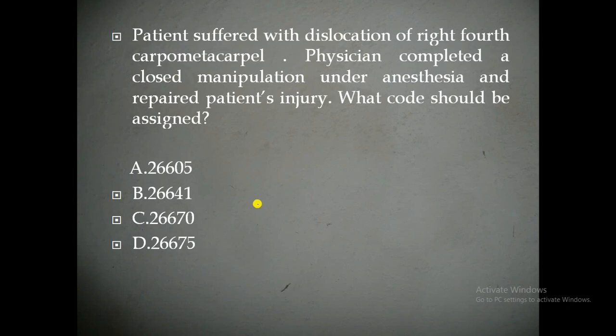In this scenario, the patient is having a dislocation — specifically to the 4th carpometacarpal location. To treat the dislocation, the physician is performing a closed manipulation procedure, and this is done under anesthesia so the patient does not have pain during the treatment. So how do we select the CPT code?